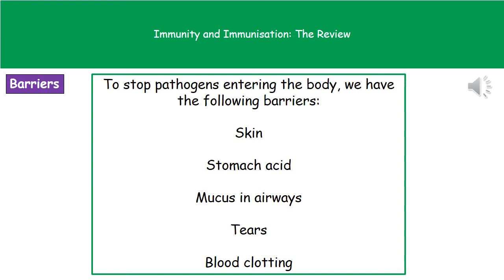If we're ingesting things, we've got stomach acid inside our stomach which will kill any microbes that get there. We've got mucus that lines our airways, which will trap microbes and prevent them getting any deeper into our respiratory system. We've got tears that contain enzymes to break down anything on the surface of our eyes. And if we cut ourselves, our blood has the ability to clot to seal the wound and prevent any microbes getting inside us.